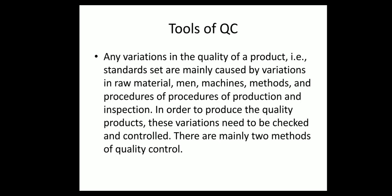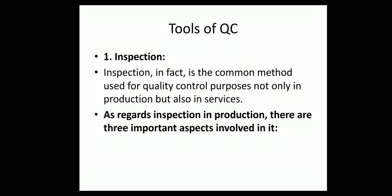Tools of QC: any variations in the quality of a product are mainly caused by variations in raw materials, men, machines, methods, and procedures of production and inspection. These variations need to be checked and controlled to produce quality products. There are mainly two methods of quality control. Variations may arise because of raw material, workmen, machine, method, or procedure of production — all of these should be normalized and uniformized. Inspection is the common method used for quality control purposes, not only in production but also in services.